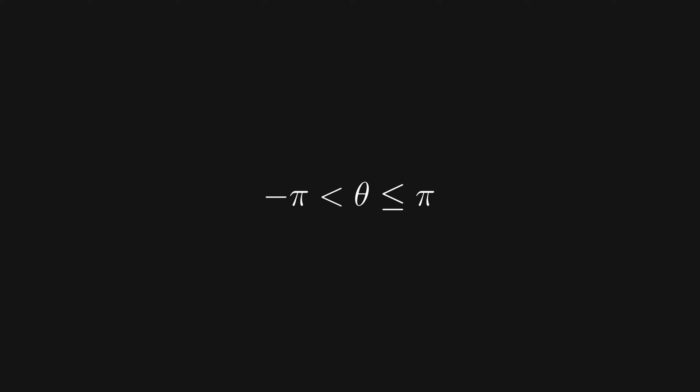To fix this, we usually restrict theta to be between negative pi and pi. We call this the principal log, and denote it with a capital L, log z.